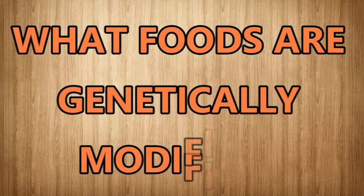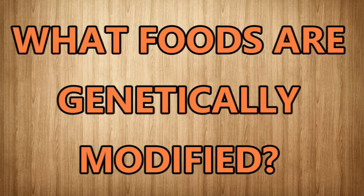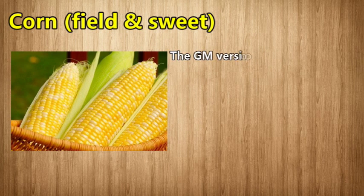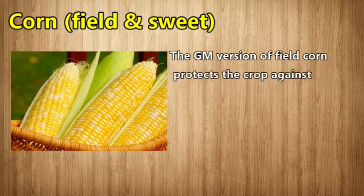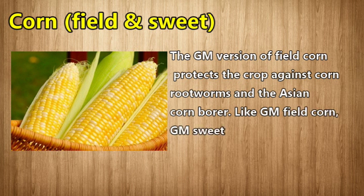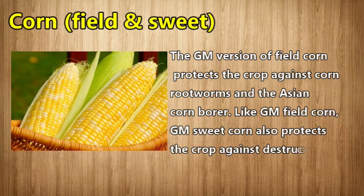What foods are genetically modified? Corn: the GM version of field corn protects the crop against corn rootworms and the Asian corn borer. Like GM field corn, GM sweet corn also protects the crop against destructive pests.